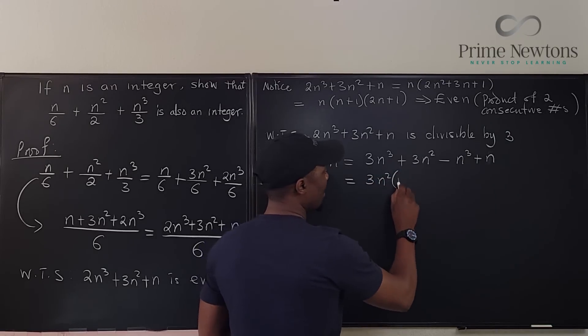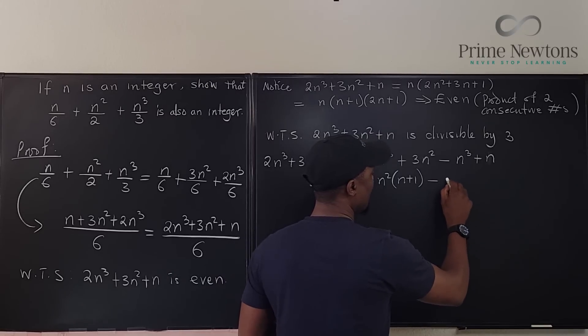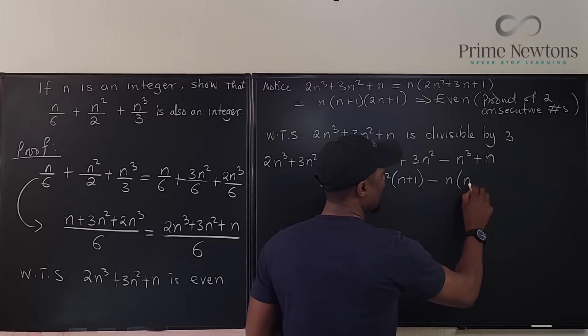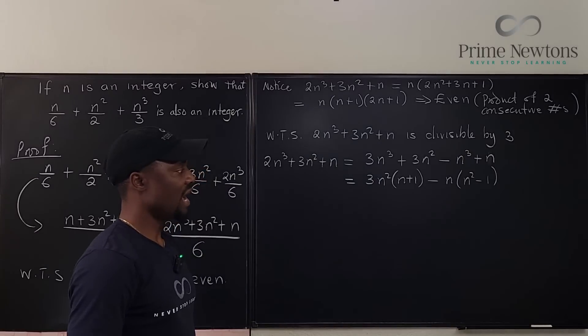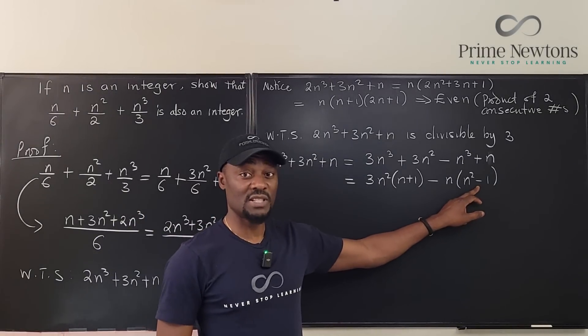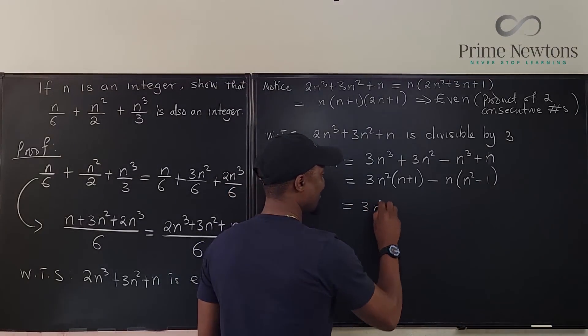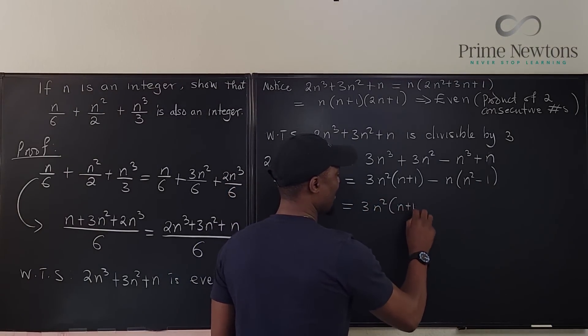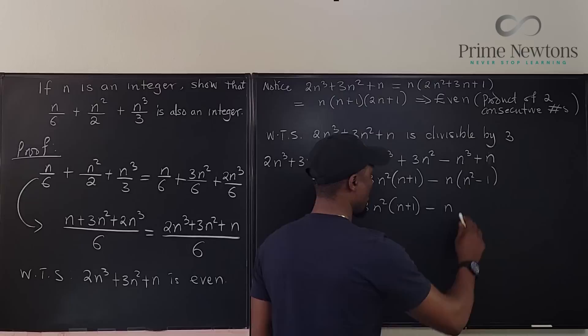What can we factor? We can factor 3n squared into n plus 1. What can we factor here? Minus n into n squared minus 1. n squared minus 1 is difference of two squares, so this is 3n squared times n plus 1 minus...